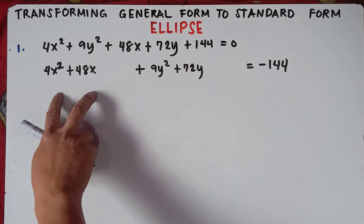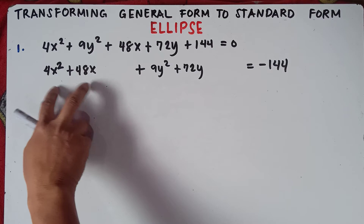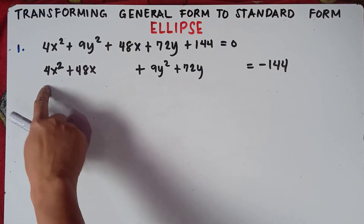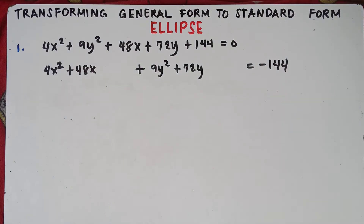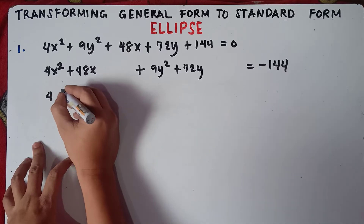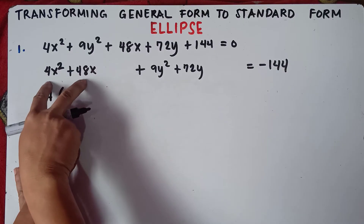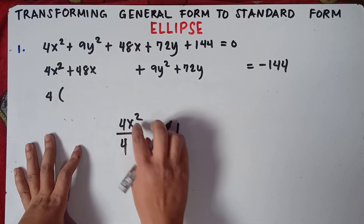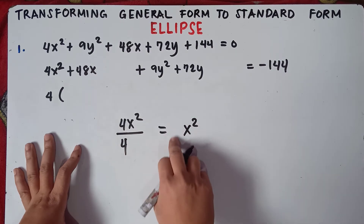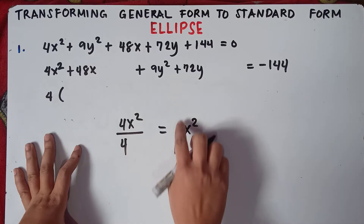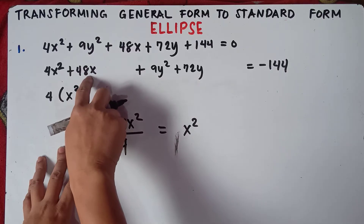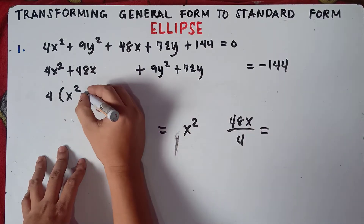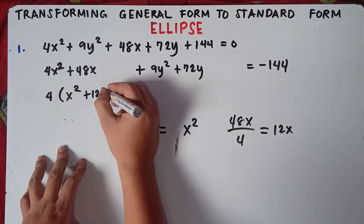Before doing the completing the square, check the variables if we can factor the number. Check the x variables: can we factor out the number? Is there a number that we can divide both 4 and 48 by? Yes, we can divide by 4. We can factor this out by 4. So that would be 4, then parenthesis. 4x squared divided by 4: 4 divided by 4 is 1, then copy x squared, so x squared. Then 48x divided by 4: positive 48 divided by positive 4 is positive 12, so 12x.